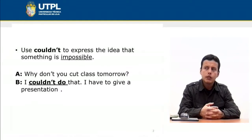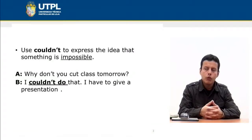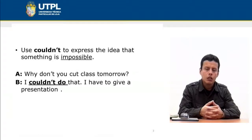Use couldn't to express the idea that something is impossible. You can see a dialogue between two people: 'Why don't you cut class tomorrow?' 'I couldn't do that. I have to give a presentation.' In this case, person B is expressing impossibility — that it is impossible for him or her to cut class tomorrow.